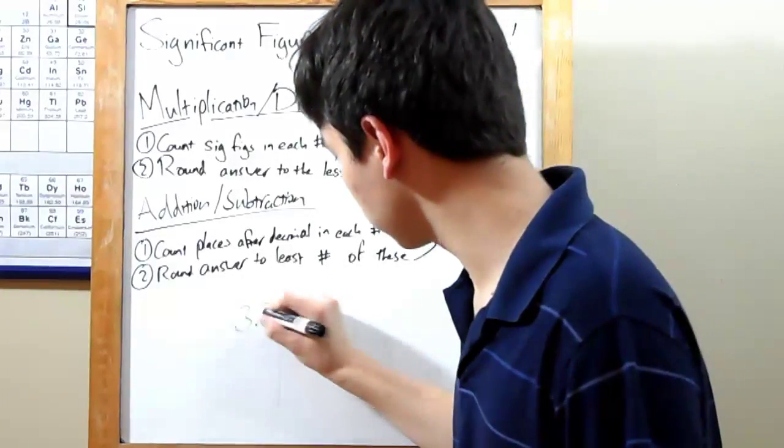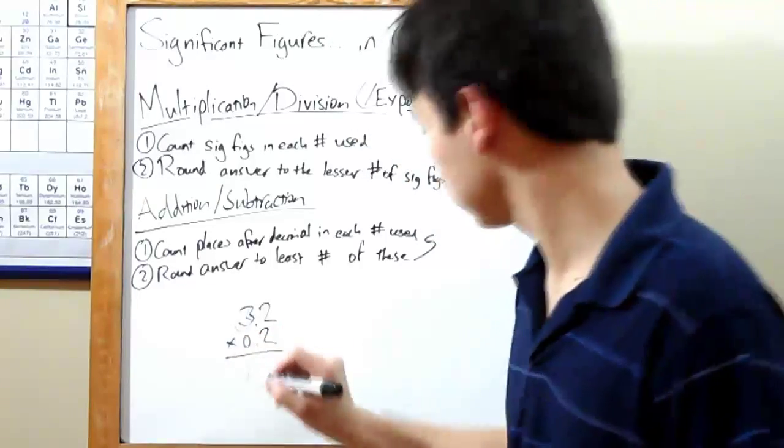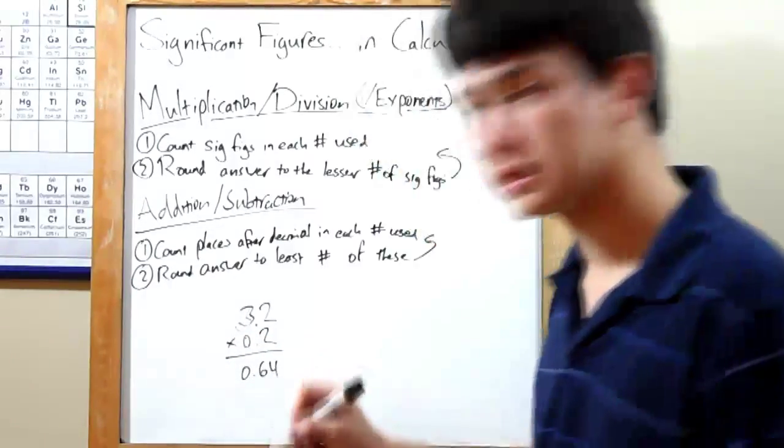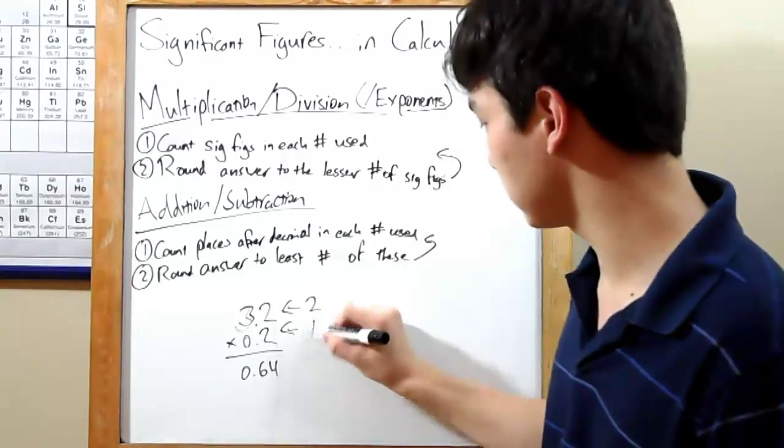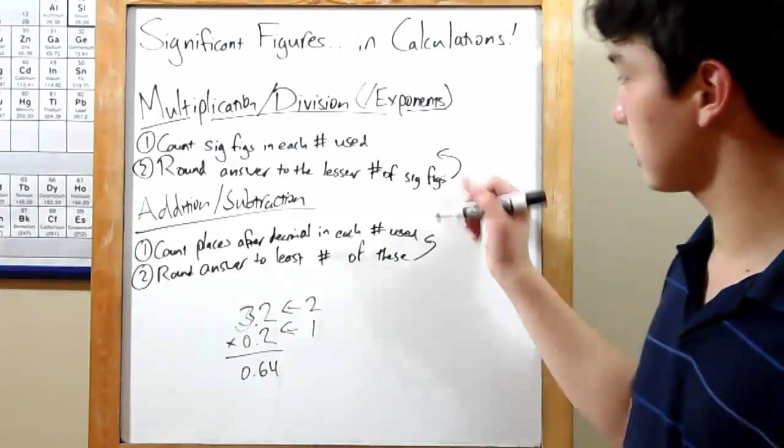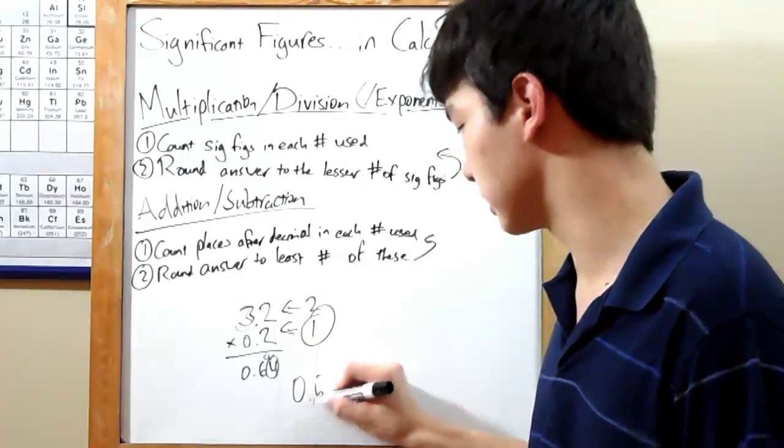So let's say you've got 3.2 and you're multiplying by 0.2. Multiplying out gives us 0.64, but check your sig figs. 3.2 has only 2 sig figs, 0.2 has only 1. Now, use the lesser of these. One's less than 2, so round to only one significant figure, and you've got 0.6.